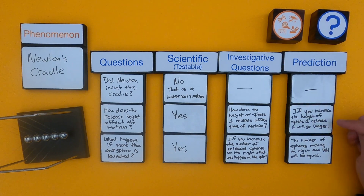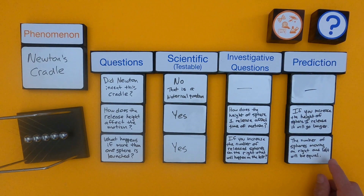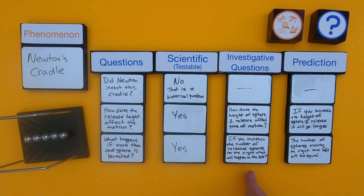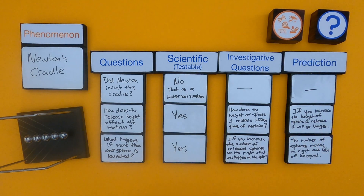I couldn't make a prediction on the first one. For the next one: if you increase the height of sphere one's release, it will go longer. For the third one: if you increase the number of spheres moving on the right, I think the number that move on the left will be equal to the number moving on the right. What we've done is asked some initial questions, figured out which ones are scientific, come up with investigative questions we could actually test, and made predictions of what we think might happen.